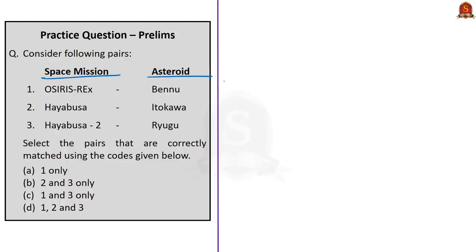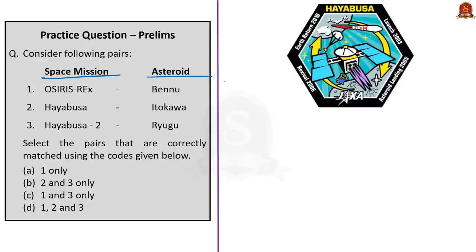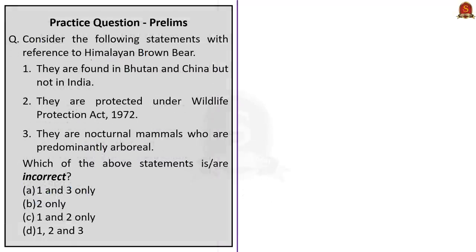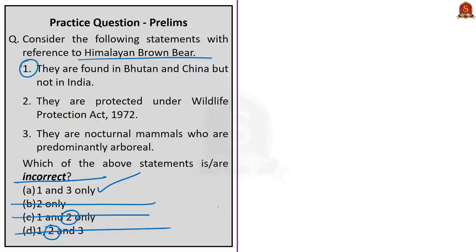The next question is about the Himalayan brown bear, with three statements. Statement one — they are found in Bhutan and China but not in India — is incorrect, as they are found in India's high-altitude ranges of alpine meadows and subalpine forests of Jammu and Kashmir, Ladakh, Himachal Pradesh, and Uttarakhand. Statement two — they are protected under the Wildlife Protection Act 1972 under Schedule I — is correct. Statement three — they are nocturnal mammals who are predominantly arboreal — is incorrect; they are diurnal and considered the least arboreal of all bear subspecies. The correct answer is option A: one and three only.